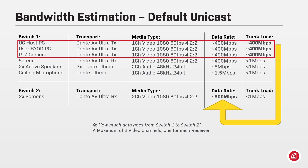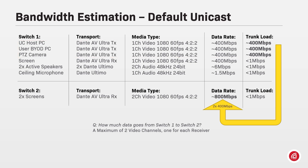As all devices default to sending media per unicast, each of them can only send one video channel to each of the receivers on switch 2. Therefore, there can only be a maximum of two unicast video channels coming from switch 1 to switch 2. Considering the maximum data rate of both screens together is 800 megabits per second, we could confirm that only the data necessary to feed these two screens will be sent from switch 1 to switch 2.